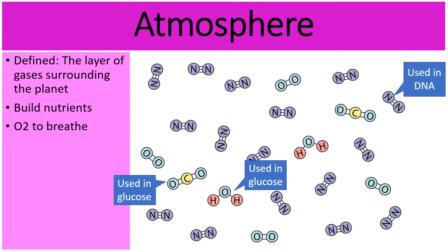And so don't forget, there's also just oxygen, O2, that is used to breathe in respiration. So breathable oxygen. So these gases that are part of the atmosphere are used to build nutrients in living organisms.